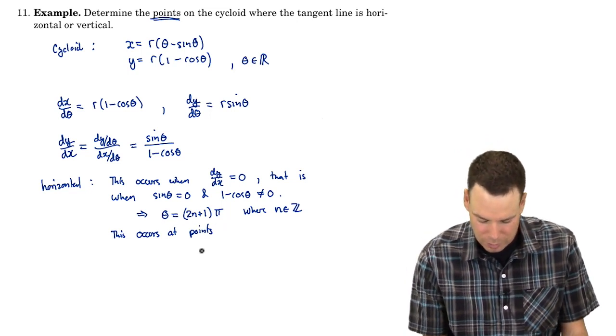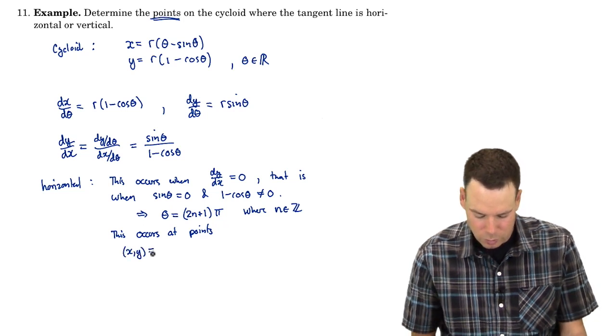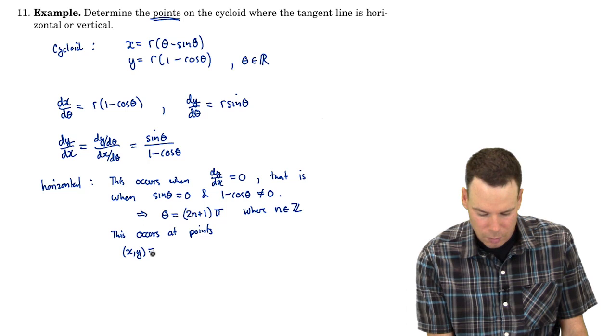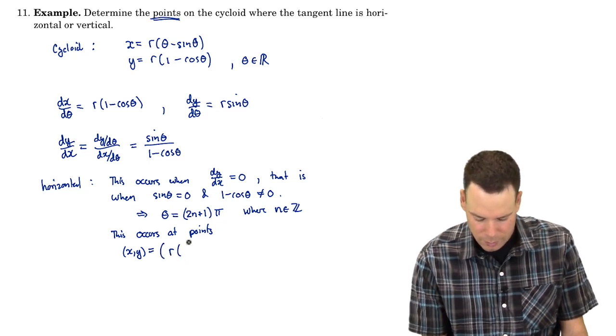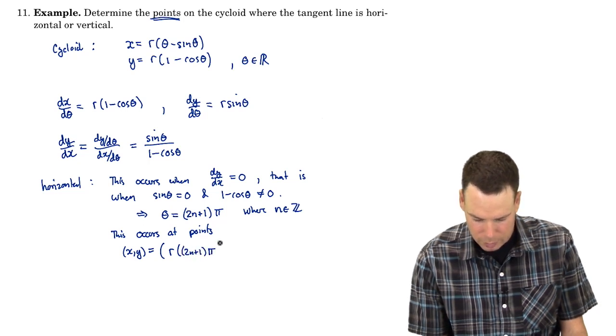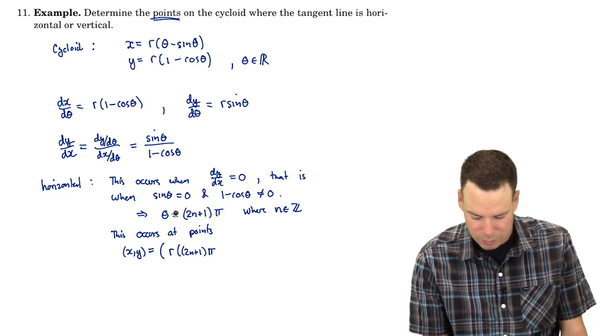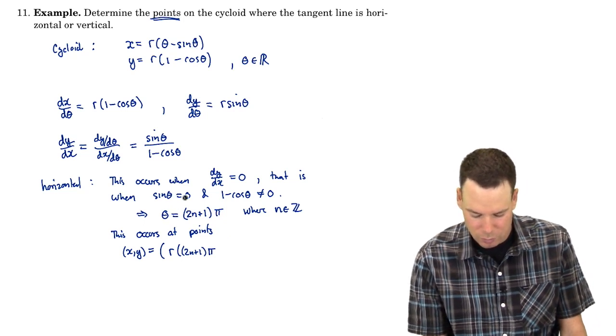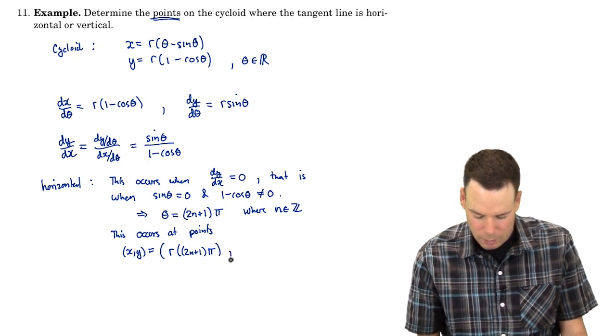So this occurs at points xy is equal to, so r times theta which is 2n plus 1 pi minus sine of theta, well that would be 0 because that's how theta was chosen. It was chosen so that sine of theta was 0.